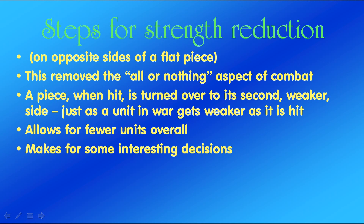Steps for strength reduction: the steps would be on the opposite side of a flat piece. On one side it would give the strength, movement, and so on of a piece, and on the other side the reduced strength and movement. This removed the all-or-nothing aspect of combat. A piece when hit is turned over to its second, weaker side — just as a unit in war gets weaker as it is hit. Though if it's hit hard enough it may be wiped out even if it's on its good side to start with. This allows for fewer units overall and makes for some interesting choices and decisions by the players.